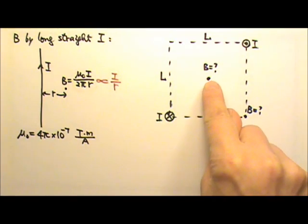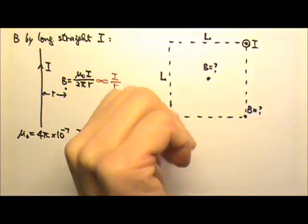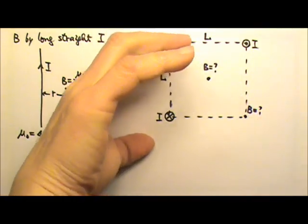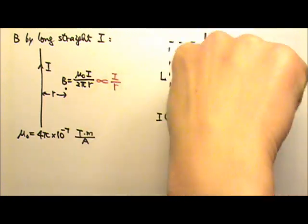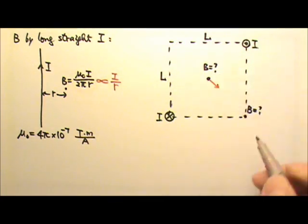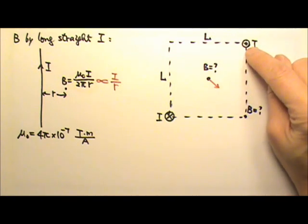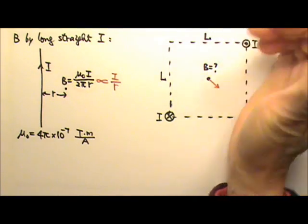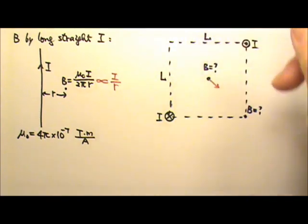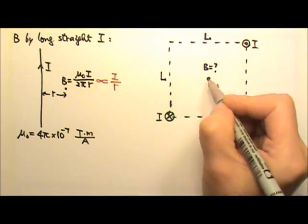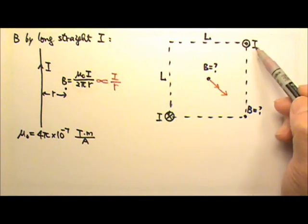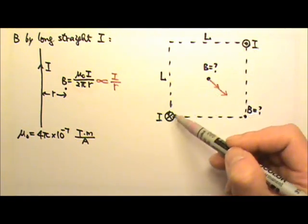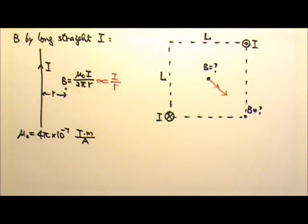For the direction of the magnetic field produced by this current, we can use the thumb to follow the current. On that side, the magnetic field should be clockwise and tangent to the circle. Since the other current comes out of the paper, its magnetic field lines will go counterclockwise and tangent to the circle. So these two magnetic fields will be in the same direction, and we'll have to add the magnitudes together. Since there is the same amount of current and equal distance away, these two must have the same magnitude.